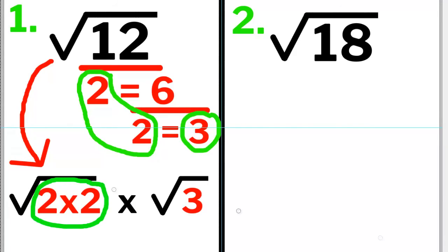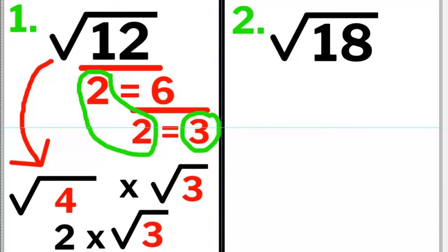2 times 2 equals 4. The square root of 4 is 2. Now we have 2 times the square root of 3. We can take out the times sign, and our final answer is written like this: 2 times the square root of 3. This is the simplified form.